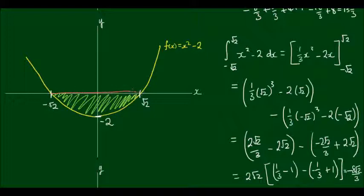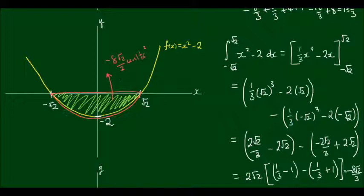So this area is going to equal negative 8 root 2 over 3 units squared. You might be thinking: how is it possible to have a negative area? Well, in this instance it is not mathematically incorrect — we performed this definite integral in the correct way and the negative result is what we came out with. But physically it is obvious that it is impossible to have a negative area. So depending on what your teacher wants you to do, note that the physical area would be the absolute value of this integral.